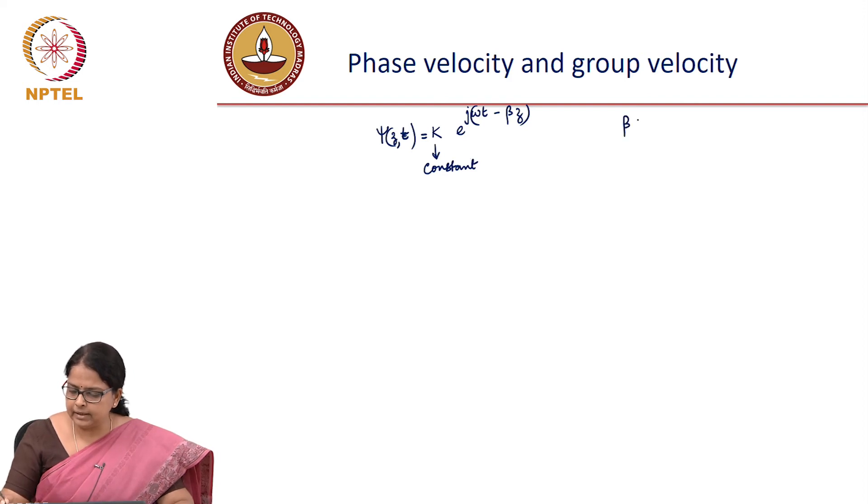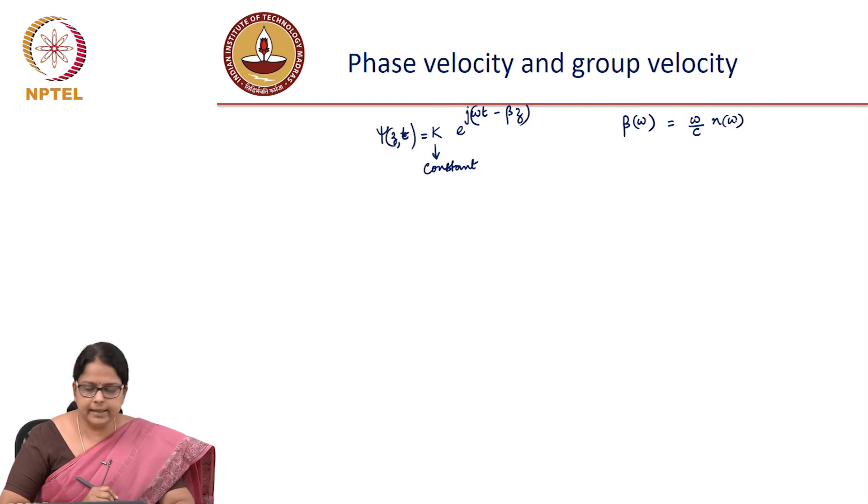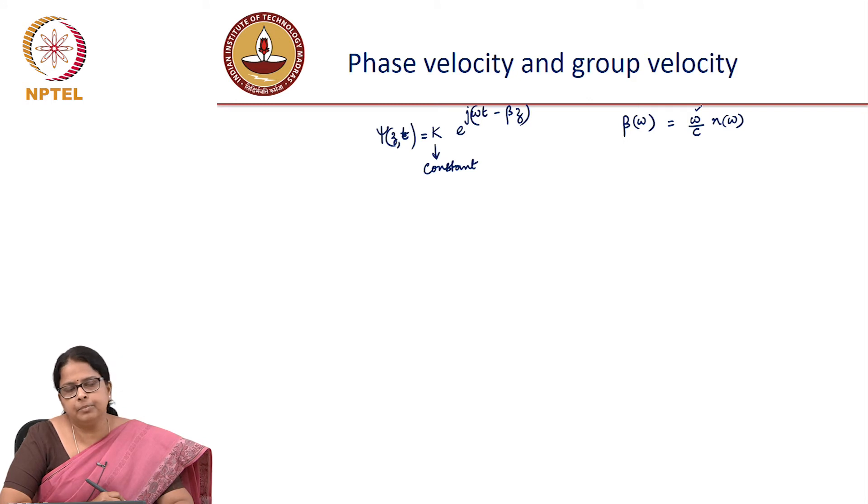This is some constant which represents the strength of the wave. And this beta is a function of omega and this is, how can I represent beta? Omega by c times n which is a function of omega. And that is how beta depends on omega depending on your, of course, there is a linear relation here, beta is always a function of omega, but the point is whether n is a constant or n is a variable and n is a variable as a function of omega.